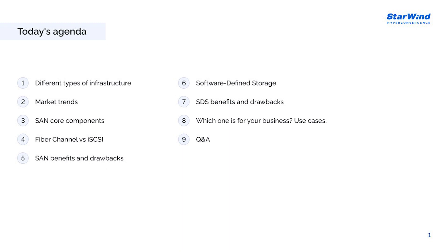Let's discuss our agenda for today. We're diving into a really interesting topic — the fight between SAN and Software Defined Storage. We'll also chat about infrastructure and compare converged and hyperconverged infrastructure, and see how the industry has changed over the past decade. We'll cover core components and key differences between two main protocols: Fiber Channel and iSCSI.